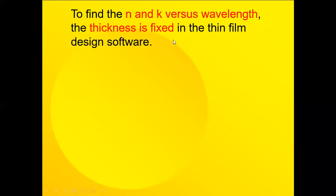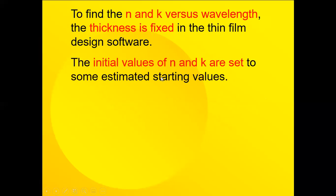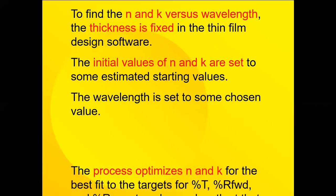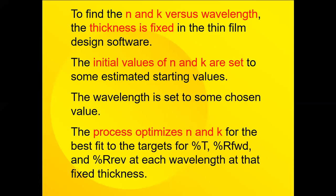To find the N and K versus wavelength at these measured wavelengths, the thickness is fixed at the value which we just found. Then the initial values of N or K are set into the software as estimated starting values, and then we optimize for a given chosen wavelength. So we have the three data points for two reflections and transmission, and the process optimizes for N and K for the best fit to those targets.